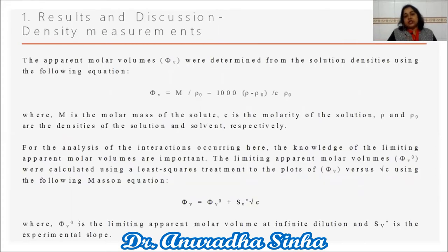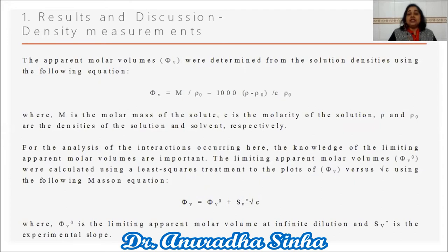Coming to the results and discussion, the first is the density measurement. The apparent molar volumes φ_V were determined from the solution densities using the standard equation, where M is the molar mass of the solute, c is the molar concentration, and ρ and ρ₀ are the densities of the solution and solvent respectively. The limiting apparent molar volume φ_V⁰ was calculated using the least squares fit of φ_V versus √c, giving the limiting apparent molar volume at infinite dilution and the experimental slope S_V*.